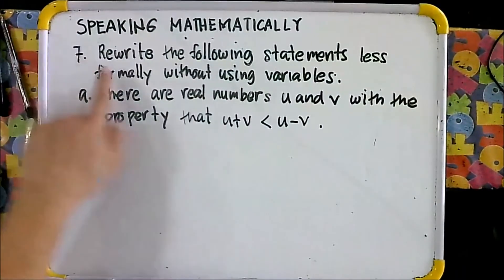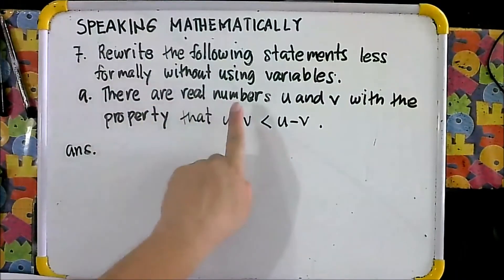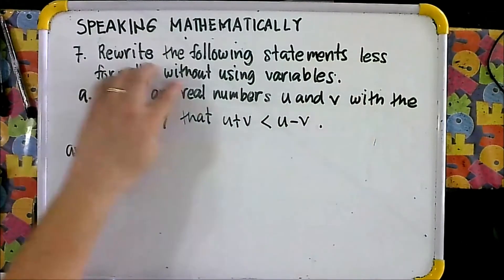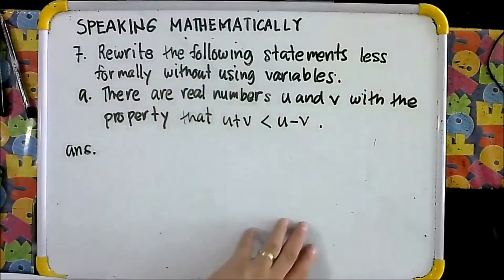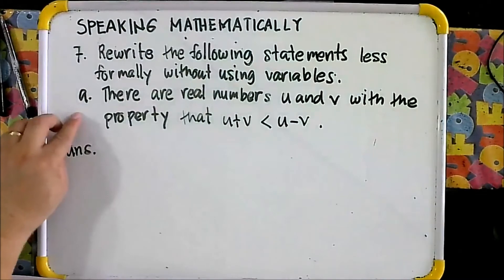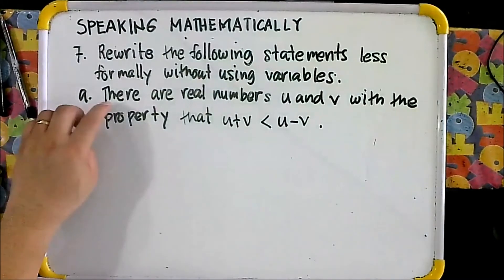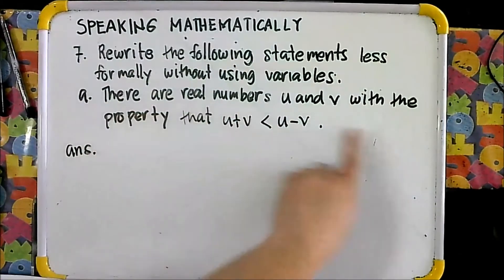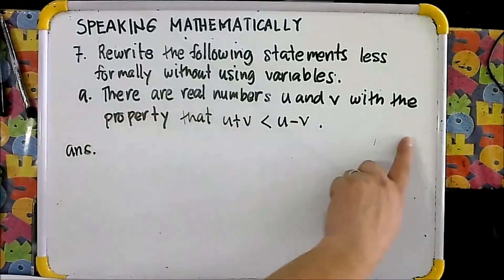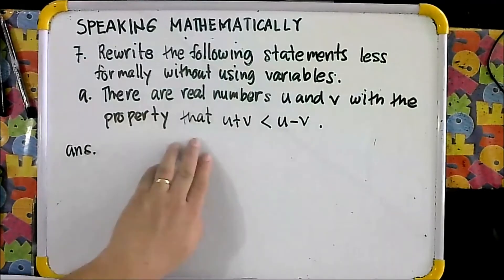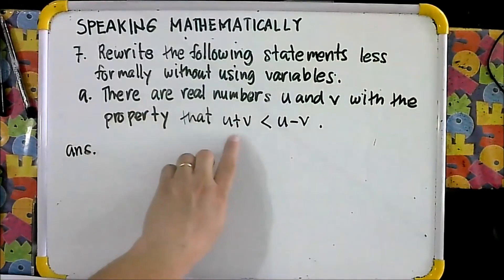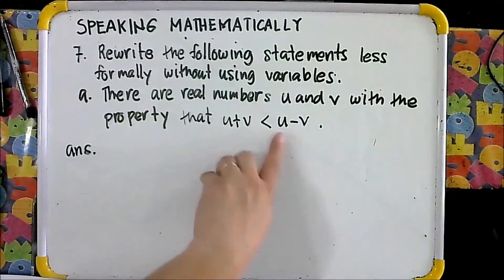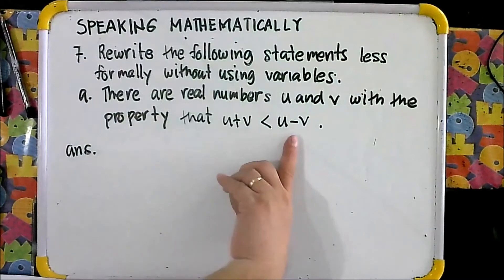For number 7, rewrite the following statements less formally without using variables. For letter A: there are real numbers U and B with the property that U plus B is less than U minus B.